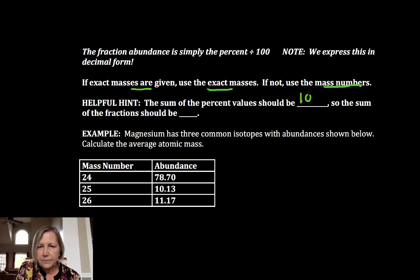A helpful hint: the sum of all percent abundance should be 100. The sum of all fractions should be 1. Okay, so with that backdrop, let's do magnesium.